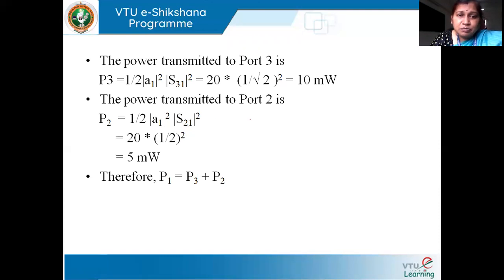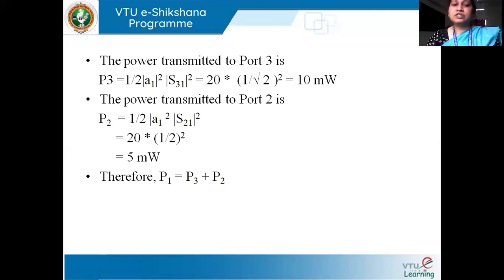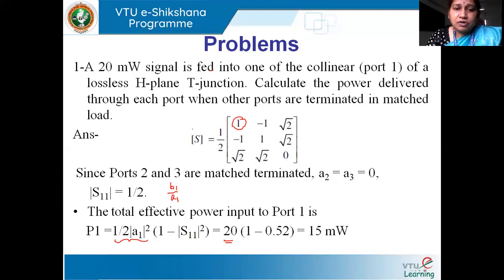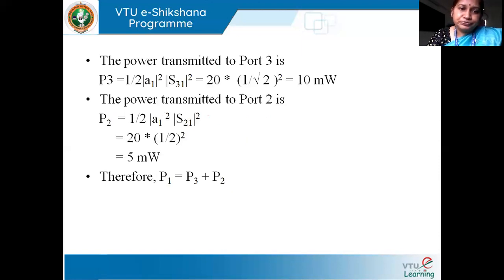Similarly, the power transmitted to port two can be found the same way. The input power at port one is (1/2)|A1|² = 20 milliwatts. Power at port two = 20 × |S21|². From the matrix, S21 is −(1/2), so |S21|² = 1/4. Therefore, P2 = 20 × (1/4) = 5 milliwatts.